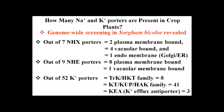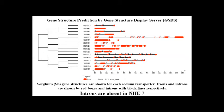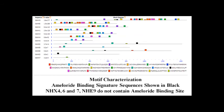Out of 52 potassium transporters identified, eight belong to the HKT family, 41 belong to the KUP/HAK family, and three belong to the KEA family — potassium efflux antiporters. We performed gene structure characterization using GSD software, identifying exons ranging from 1 to 19. These NHX and NHE genes harbor different numbers of exons and introns. We also performed motif characterization, identifying an amiloride-binding signature sequence — depicted in black — present in all NHX and NHE, but absent in NHX4, NHX6, and NHE9.